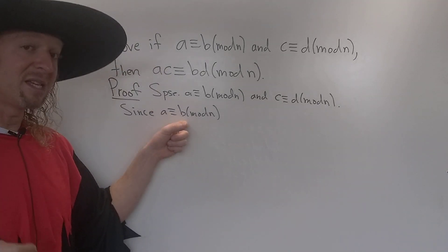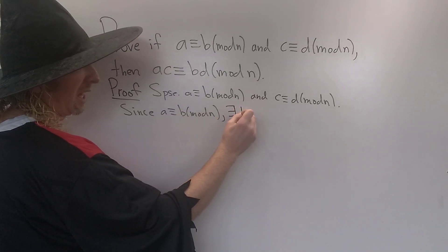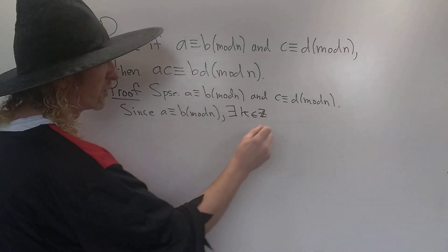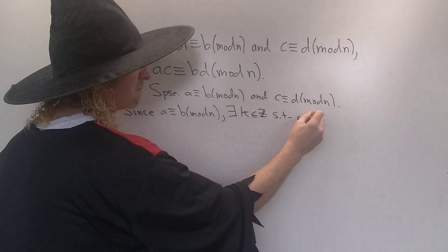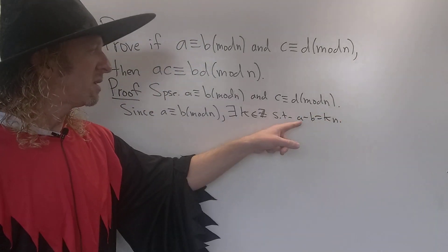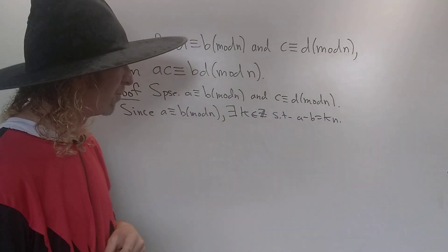So what does this mean? This means that A minus B is a multiple of N. So that means there exists an integer, let's say K, such that A minus B is equal to KN. That's what it means for A minus B to be a multiple of N. It means it's equal to an integer times N, okay? So A minus B is a multiple of N.